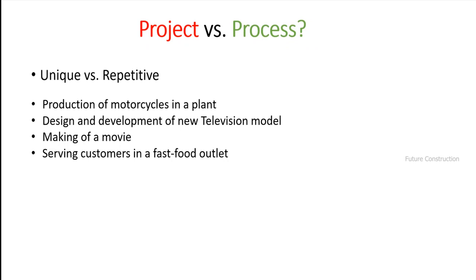Let's revisit example one: production of motorcycles in a plant. It's a process because initially it must have been created as a project, but now they're proceeding with repetitive production. So examples one and four — production of motorcycles and serving customers in a fast food outlet — are repetitive, day-to-day activities: processes. Examples two and three — making a movie and design and development of a new television model — involve something unique and temporary: projects. After the design and development of a new TV model, when production begins with fixed specifications, that production becomes a process.